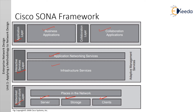The network infrastructure layer is where all IT resources are interconnected across the converged network foundation. IT resources include servers, storage, and clients. This layer represents how these resources exist in different places in the network including the campus, branch, data center, enterprise, WAN, metropolitan area network, and with the teleworker. The objective of this layer is to provide connectivity anywhere, anytime.